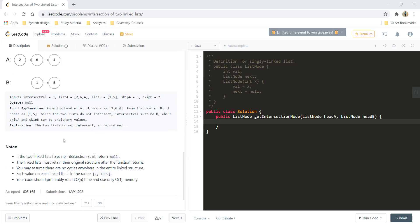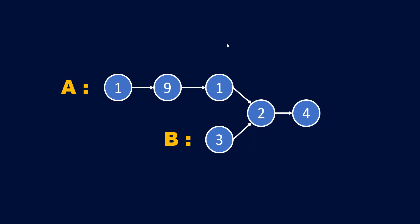So that's all about the question. Now let's go and see how we can solve this. Let's consider this example and try to find out the intersection point. We want to reach this node 2 at the same point so that we can say the pointer coming from both lists is the same and that this is the intersection point.